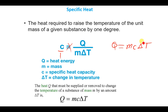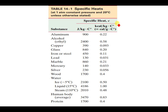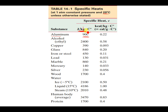This formula can be rearranged to make Q the subject: Q = mcΔT. There is also a table showing specific heats at 1 atm constant pressure and 20°C. For example, if your units are joules, kg, and degrees Celsius, you use the J/(kg·°C) column; if you are using calories, you pick the calorie column.